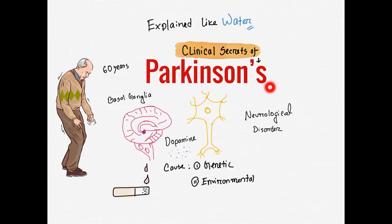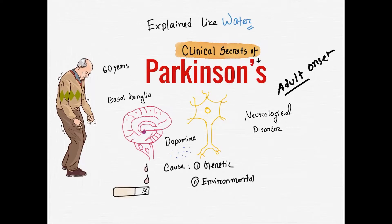What is Parkinson's disease? Parkinson's disease is a neurological disorder. It is an adult onset, progressive movement disorder. There are problems with movement. So Parkinson's disease is an adult onset, progressive movement disorder.